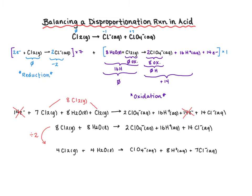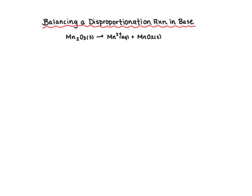Next we'll balance a disproportionation reaction in base — a manganese reaction. Manganese appears in one spot in the reactants and two in the products. Checking oxidation states: manganese has plus three in the reactant compound, plus two as Mn²⁺, and plus four in MnO2. Going from Mn2O3 to Mn²⁺ is reduction; going from Mn2O3 to MnO2 is oxidation. As a reminder, balancing in base starts by balancing in acid, then adding hydroxides at the end.